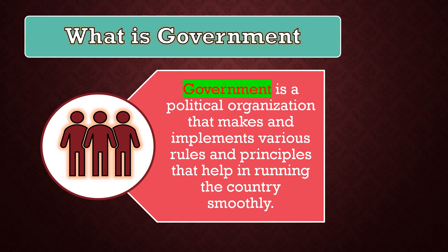This need was felt and to fulfill this need, a political organization just like government was created. Government is an institution that makes political decisions to run a country. It refers to the group of people who are responsible for controlling a country or a state. Government is also a system by which people are governed. It is very important for a democratic country — it functions according to the constitution.